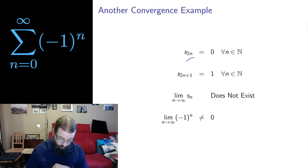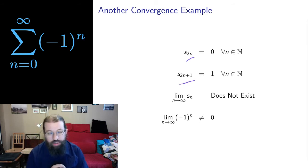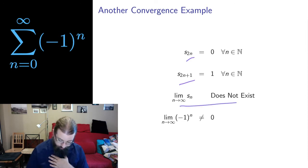We use subscripts 2n and 2n plus 1 for evens and odds. If we look at the limit of these partial sums, they're just jumping back and forth between 0 and 1. That limit cannot exist. It doesn't approach either 0 or 1, just jumps between them. The limit doesn't exist. So this particular infinite series does not converge.